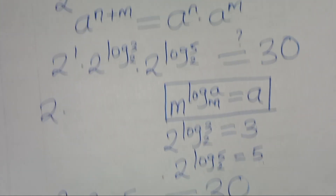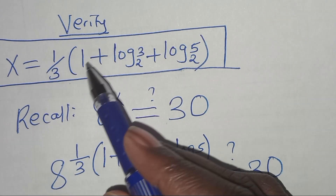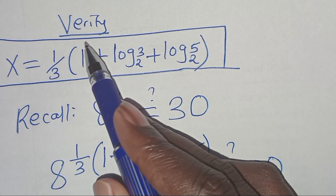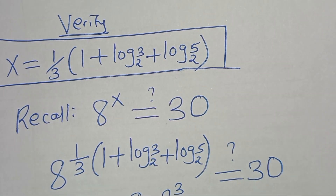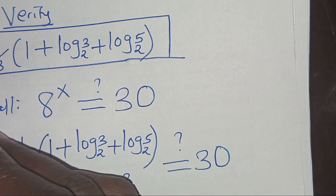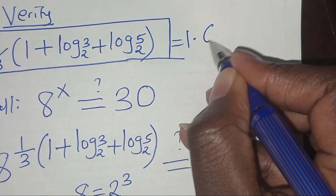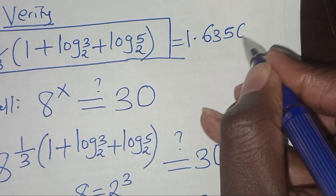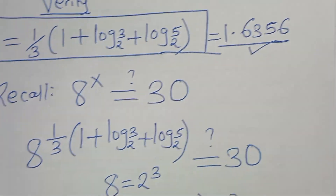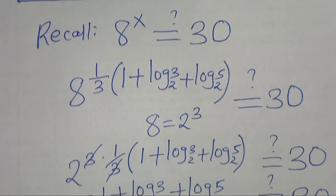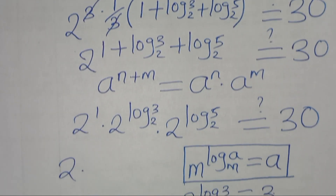And this implies that the value of x, which is equal to 1 over 3 times (1 plus log 3 to base 2 plus log 5 to base 2), actually satisfies the equation. We can also express x as approximately 1.6356. So this is the value of x. Please follow the steps, like this video, and subscribe. See you in the next video. Bye bye.